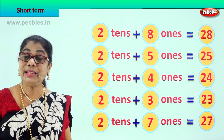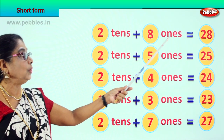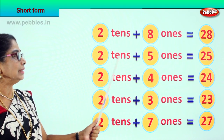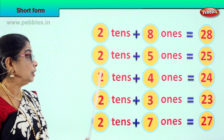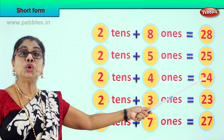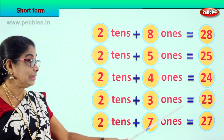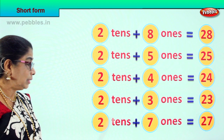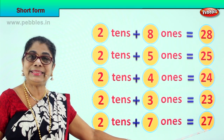Let's look at it all once again. We are learning short form. Two tens plus eight ones equals 28. Two tens plus five ones equals 25. Two tens plus four ones is equal to 24. Two tens plus three ones is equal to 23. Two tens plus seven ones is equal to 27. Did you enjoy the exercise?